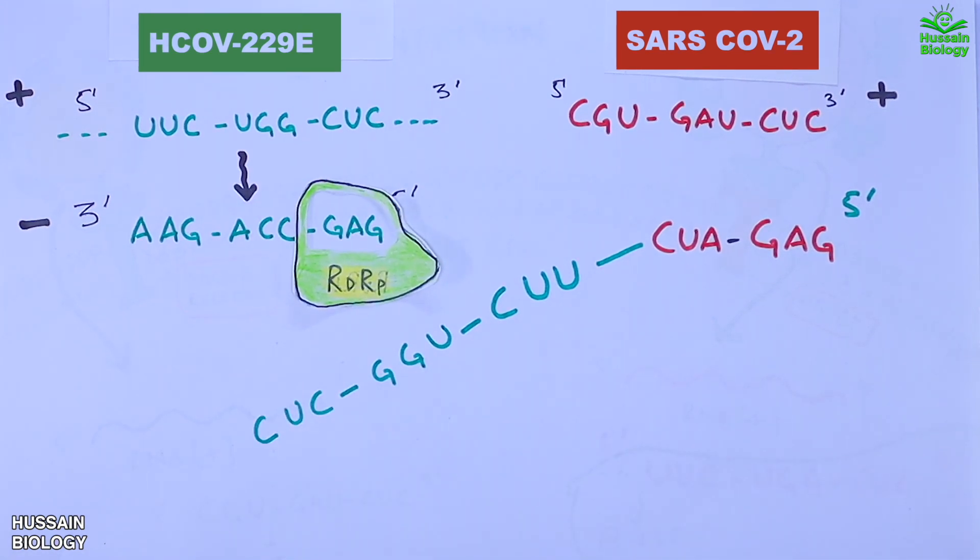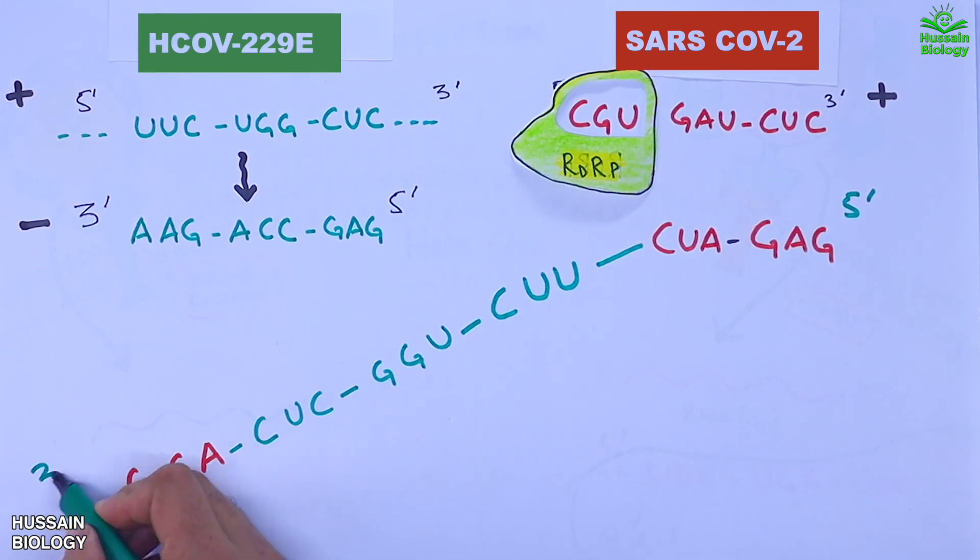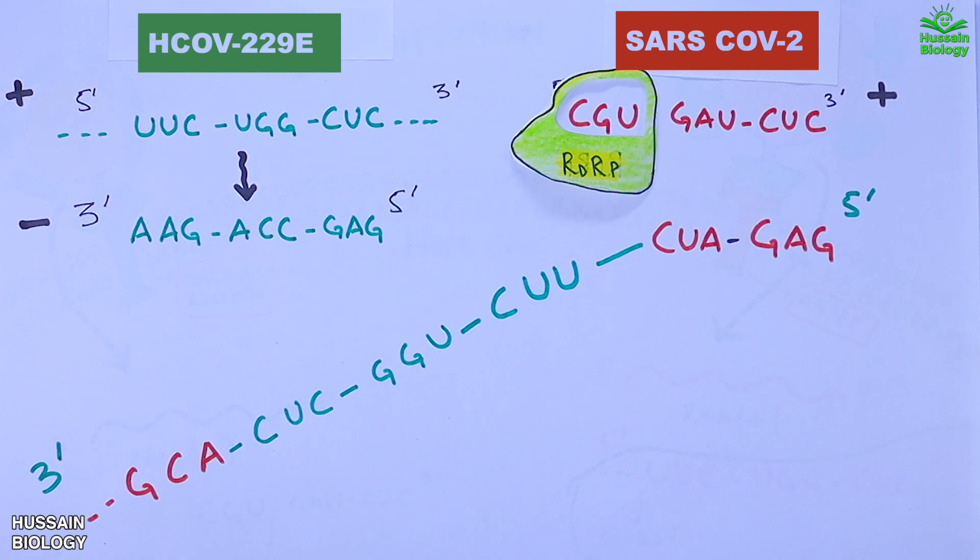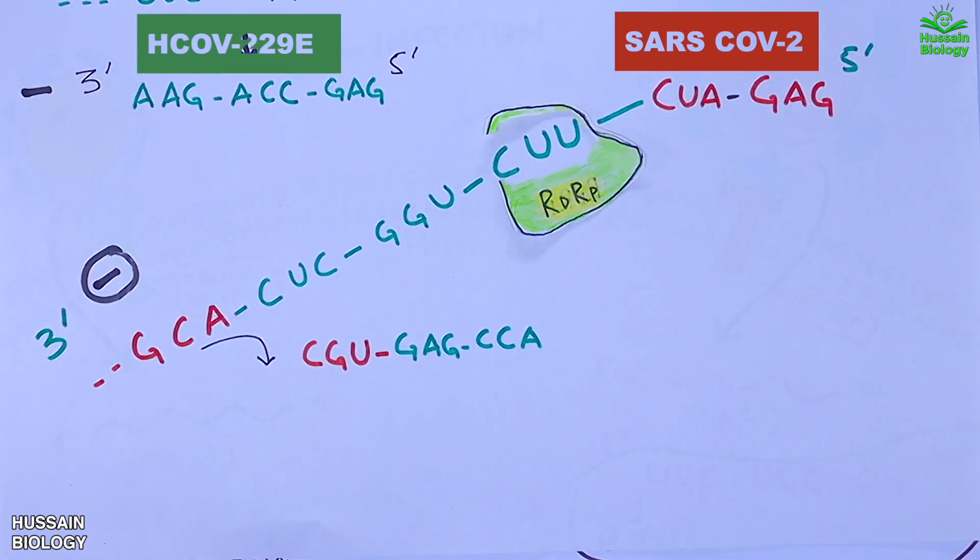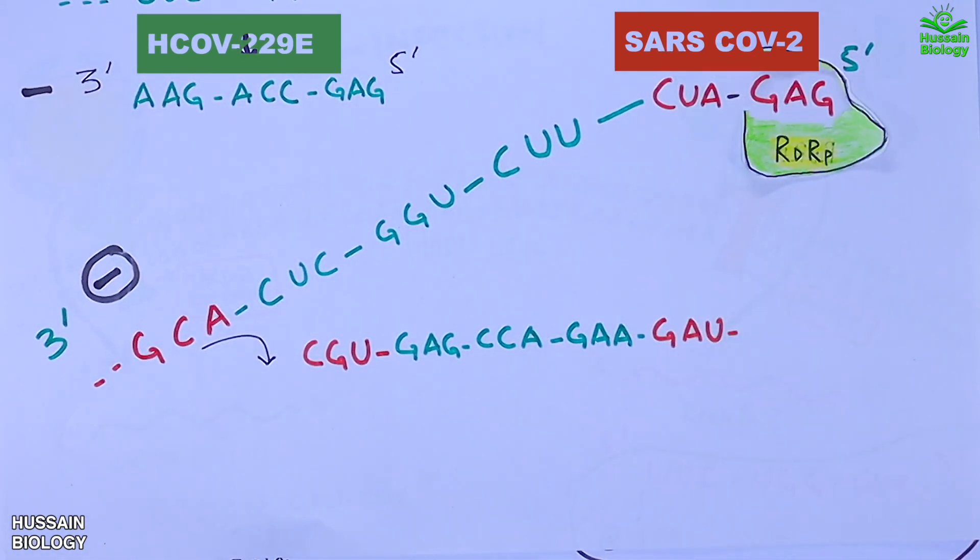And then again RNA polymerase moves to its original strand of SARS-CoV-2 and starts from where it has left. Like CGU gives us ACG. So this strand which has been developed now is the negative strand for SARS-CoV-2. The green ones are the insertion from HCOV-229E virus. And now we have to make positive strand out of it. The RNA polymerase comes in and starts making strand, and we get codons in the form of CGU, GAG, CCA, GAA, GAU, CUG and so on.